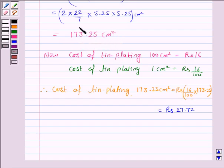So the curved surface area of the hemispherical bowl is 173.25 cm square. Therefore, the cost of tin plating the area of 173.25 cm square is rupees 27.72. The answer is rupees 27.72.